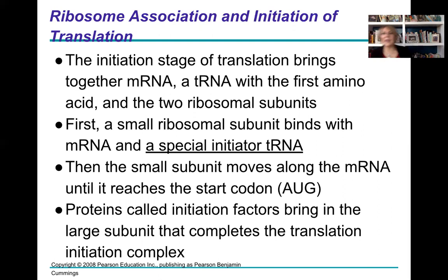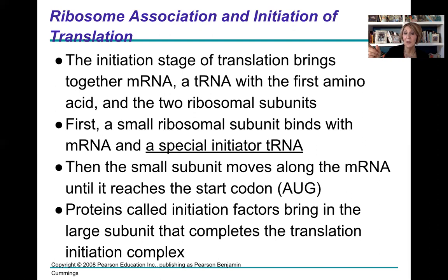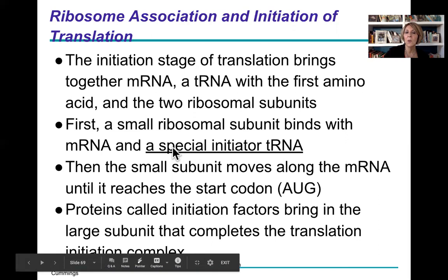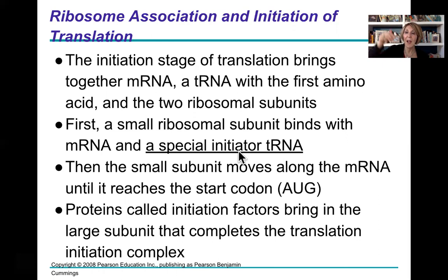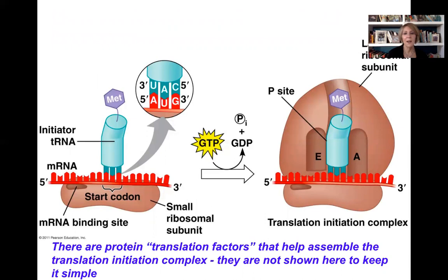In the initiation stage, everything comes together: the messenger RNA, the two ribosomal subunits, and a transfer RNA carrying the first amino acid. The very first transfer RNA is a special initiator tRNA with an anticodon that complementary base pairs with the start codon AUG on the messenger RNA. Proteins called initiation factors bring in the large ribosomal subunit until the translation initiation complex is complete.